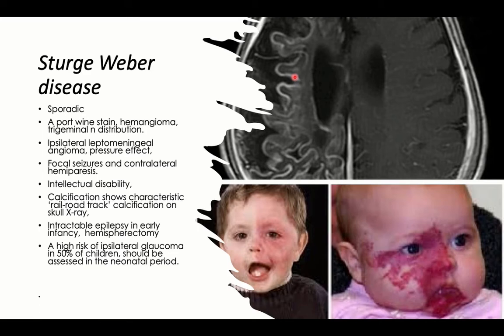The ipsilateral leptomeningeal angioma may be associated with pressure effects and can present with focal seizures and contralateral hemiparesis of the upper motor neuron type. It is commonly associated with intellectual disability.